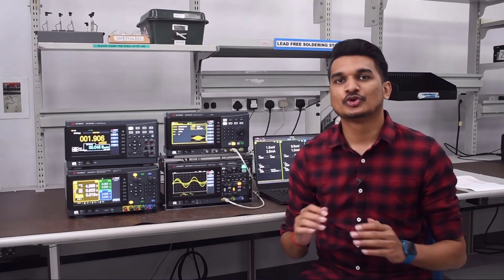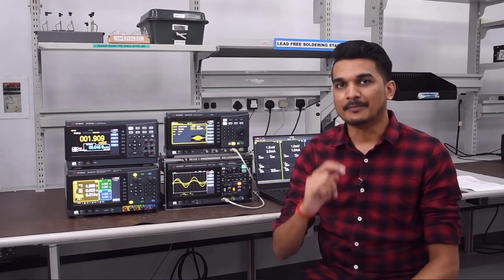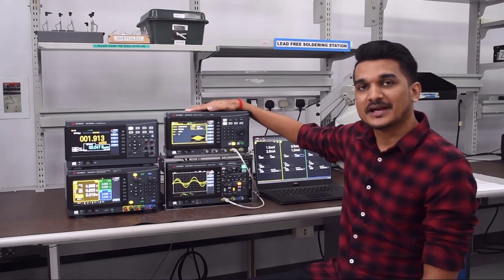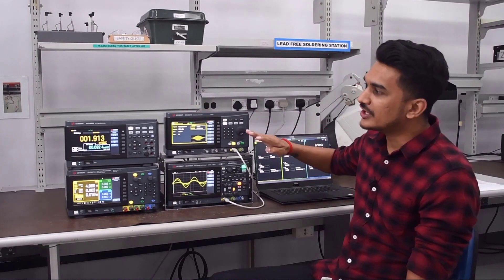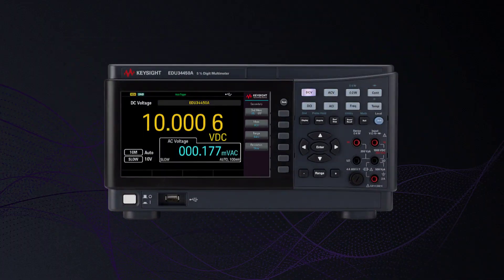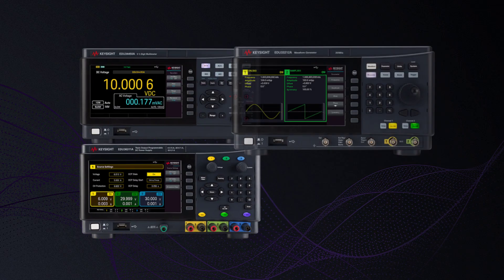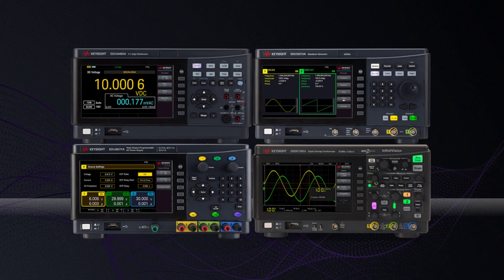In this short video, I'll introduce the latest revolution to bench test equipment for your lab. We call it the SmartBench Essentials, a set of four instruments including a digital multimeter, a power supply, a function generator, and an oscilloscope.